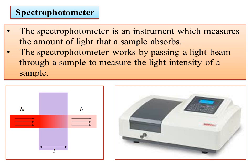A spectrophotometer works by passing a light beam through a sample to measure the light intensity. According to Beer-Lambert's Law, the amount of light that falls on the transparent medium of the sample is directly proportional to the concentration, and it also depends upon the length of the tube that the light travels. That is the principle of the instrument used in the spectrophotometer.